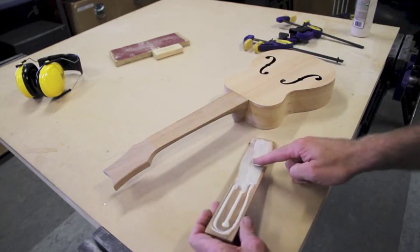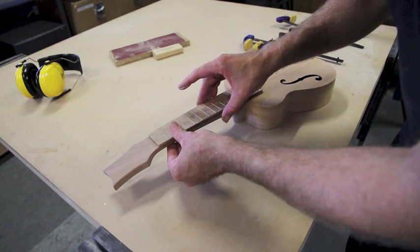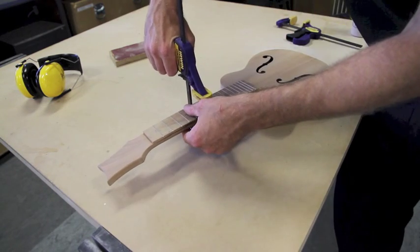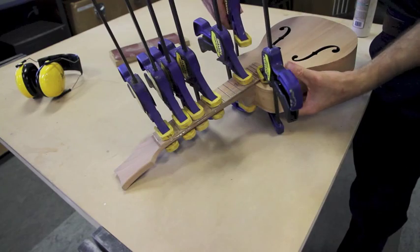Spread an even film of glue over the fretboard and line up the 14th fret with the top of the body. Put plenty of clamps on but be careful not to apply too much pressure over the fretboard when it's above the body.